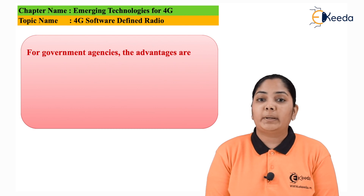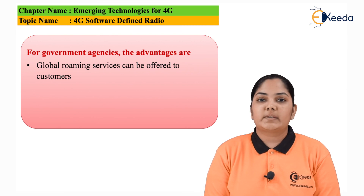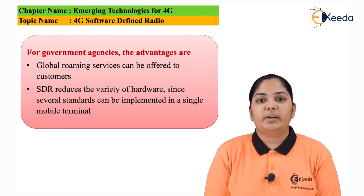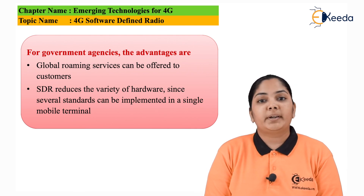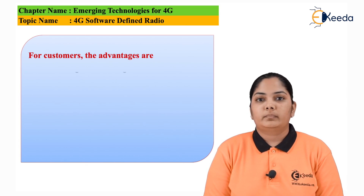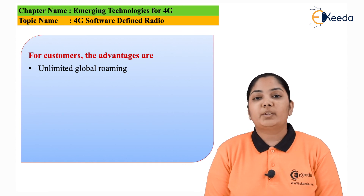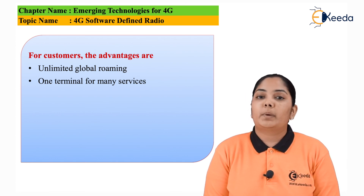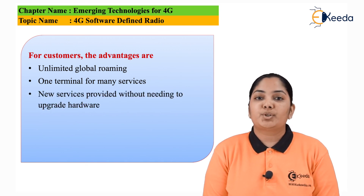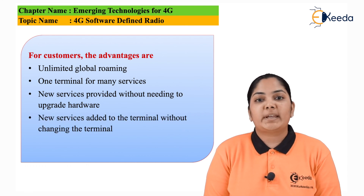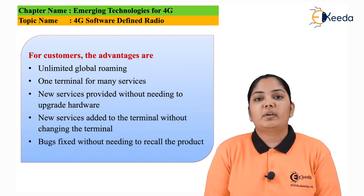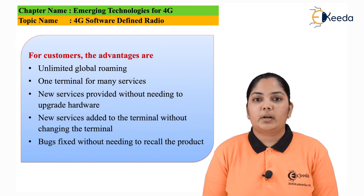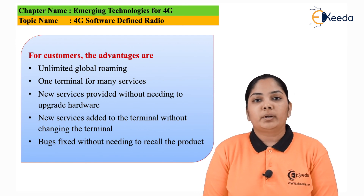Let us see the advantages for various government agencies. Global roaming services can be provided, and hardware is greatly reduced since a single software is able to provide multiple radio interfaces. For users, the advantages include global roaming — one can roam anywhere using this software defined radio in mobile phones — one terminal with many services, and new services provided without having to change the terminal itself. Bugs can be fixed with a quick software update, as we are seeing today with smartphone software updates. Thank you so much for watching this video.